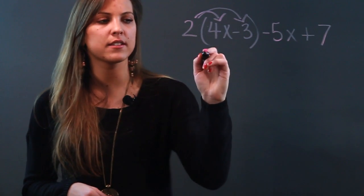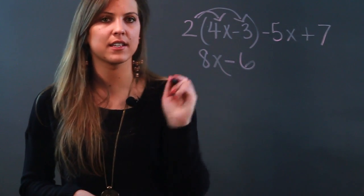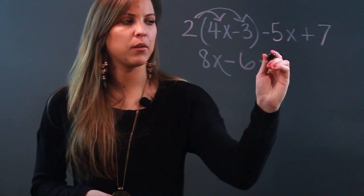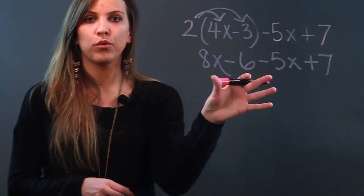So 2 times 4x equals 8x, and 2 times negative 3 equals negative 6. Now I'm going to bring down all of my other terms. Once I distribute, I've removed my parentheses.